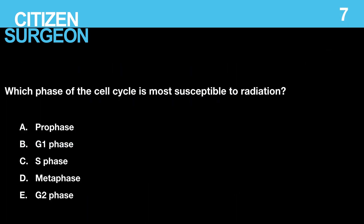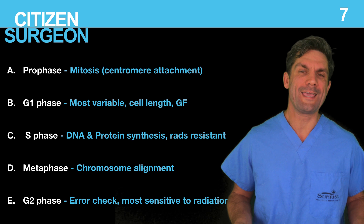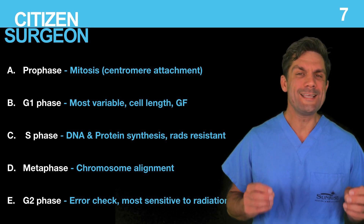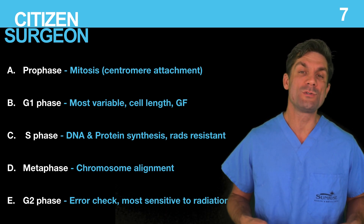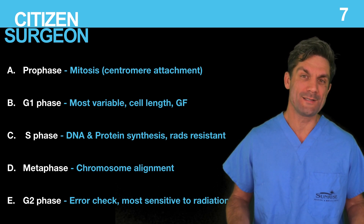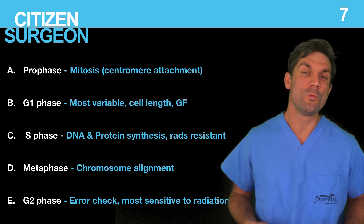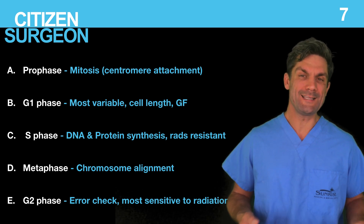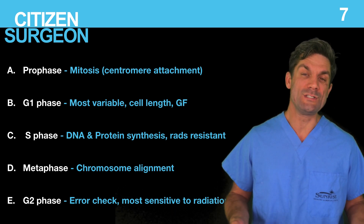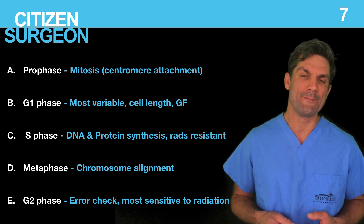Question seven: which phase of the cell cycle is most susceptible to radiation — prophase, G1 phase, S phase, metaphase, or G2 phase? The correct answer is E, the G2 phase. The synthesis phase is actually the most radiation-resistant phase — maybe a little counterintuitive. The most radiation-sensitive phase is G2, which is the error-checking time in the cell cycle.